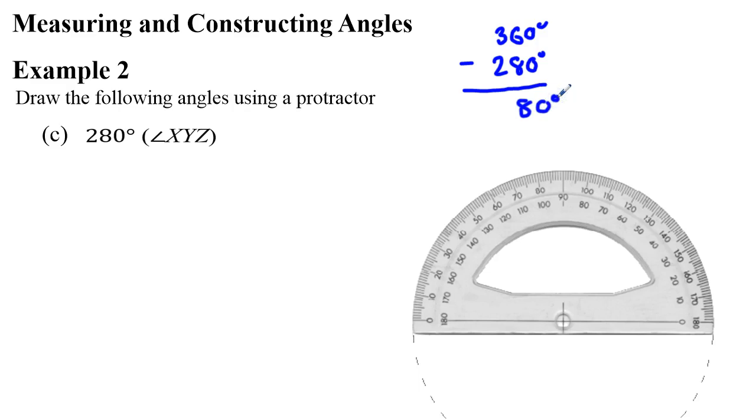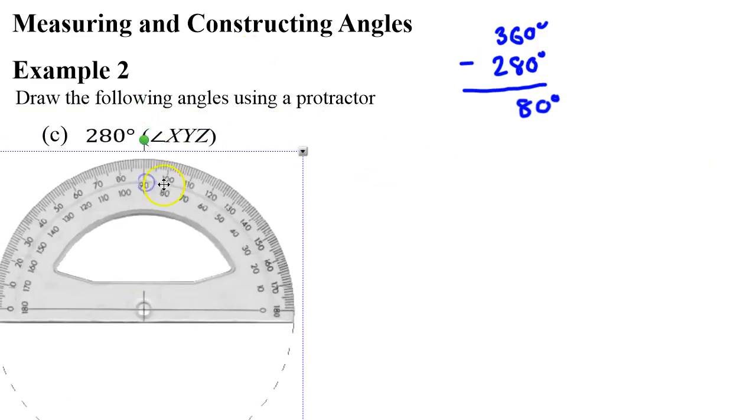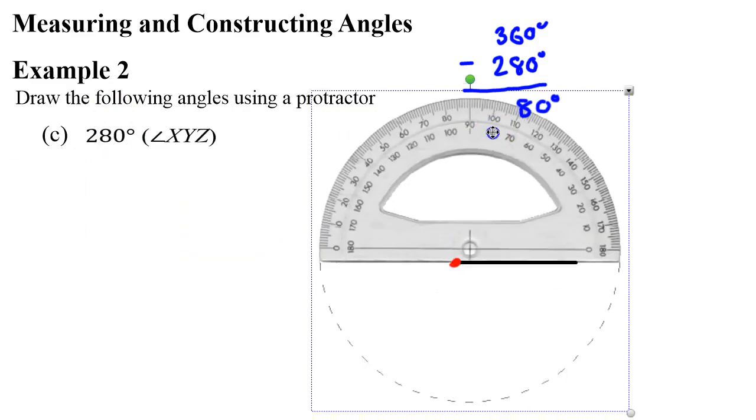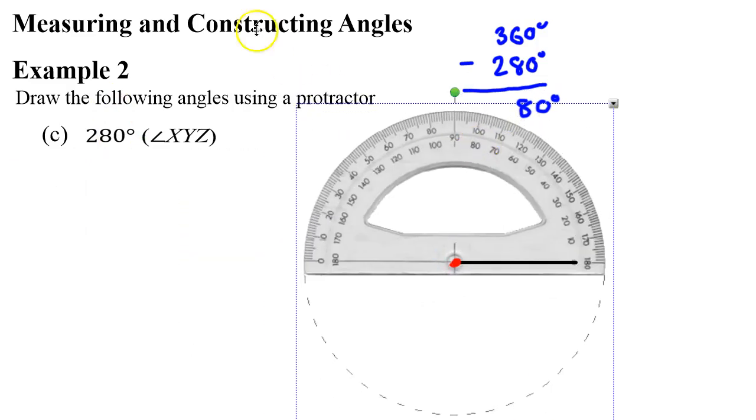We're actually going to just, for now anyway, we're going to mark out an angle of 80 degrees. So, moving our protractor to the side, we draw a straight line. So, we're following the same steps again. Put a vertex down. Grab our protractor. Put it on the center point.